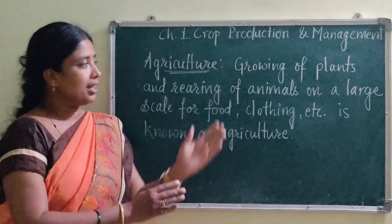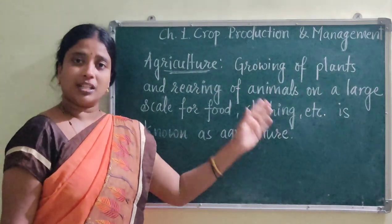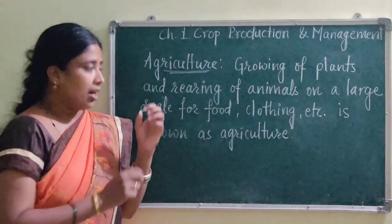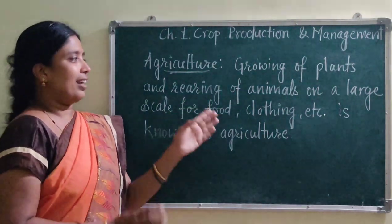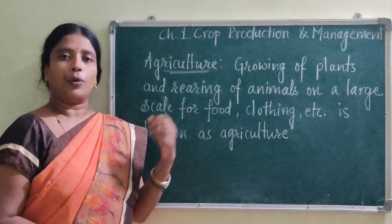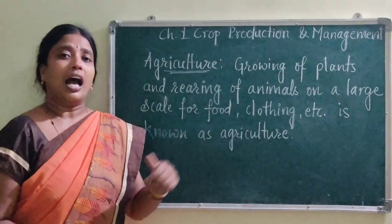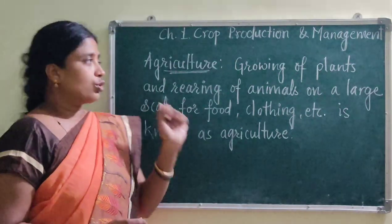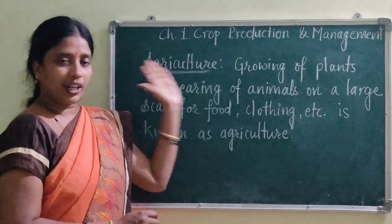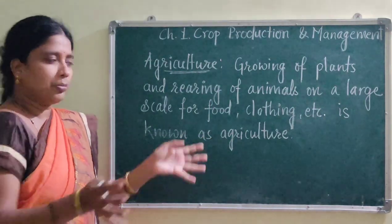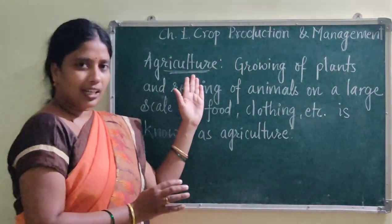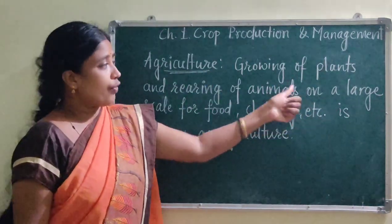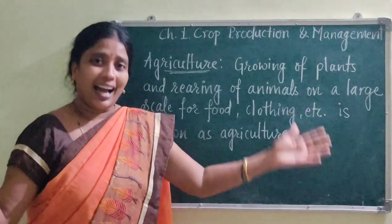For that purpose, animals are reared — meaning they are taken care of. They are fed with proper food and taken care of. The products obtained from these animals are sold in the market, and we purchase and consume them as food. So what is agriculture? Let us sum it up.